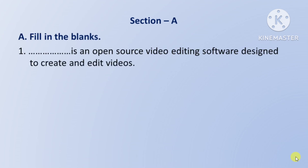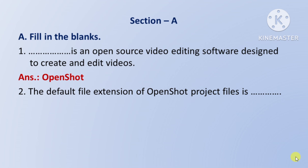First question: Open source video editing software is designed to create and edit videos — means open source video editing software jisko videos ko create karne aur edit karne ke liye design kiya gaya hai — so iska naam hai OpenShot. Next question: the default file extension of an OpenShot project file is — means OpenShot project file ki default extension kya hai — its answer is dot OSP.